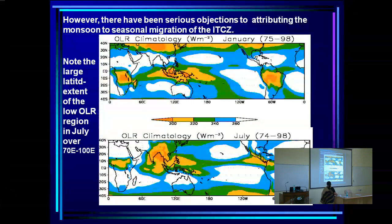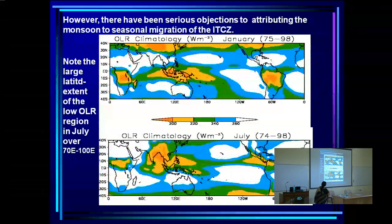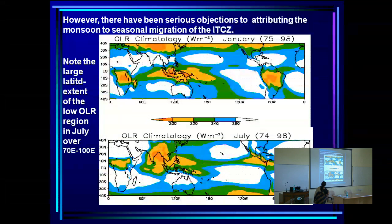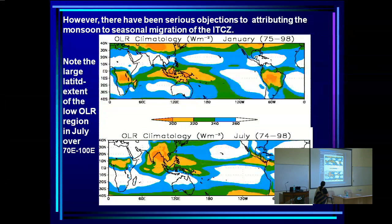If you look at the OLR climatology for January and July, you see a typical ITCZ situation where the very strong rain never exceeds about 20 degrees of latitudinal extent, and the strongest is more like 10 degrees. Murakami said: this canonical ITCZ is just a blob — look at the latitudinal extent of the monsoon region. How can you call this an ITCZ?